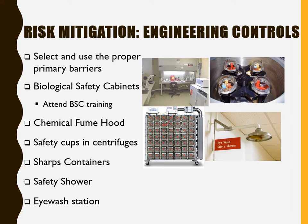Examples of engineering controls for risk mitigation: selection and use of proper primary barriers including biological safety cabinets, chemical fume hoods, safety cups in centrifuges, sharps containers, safety showers, and eyewash stations.